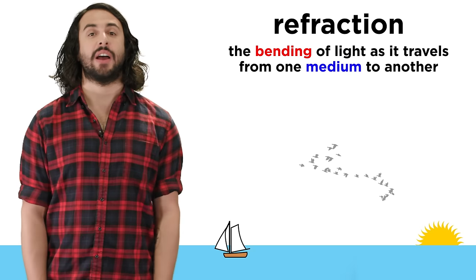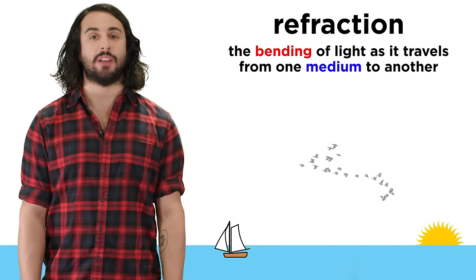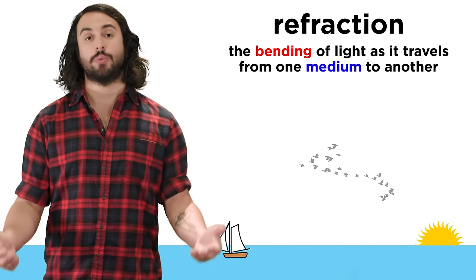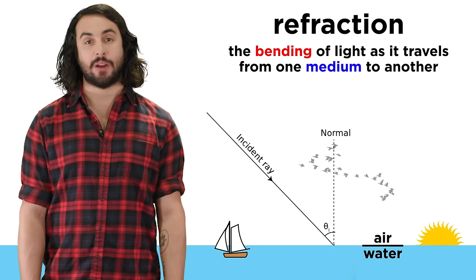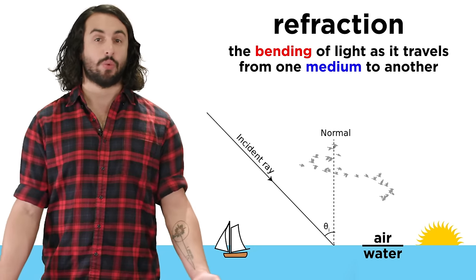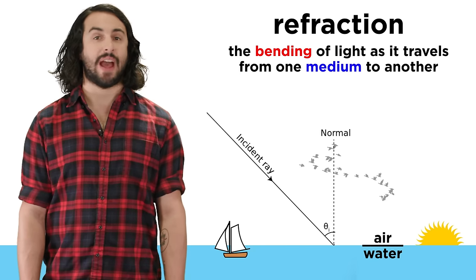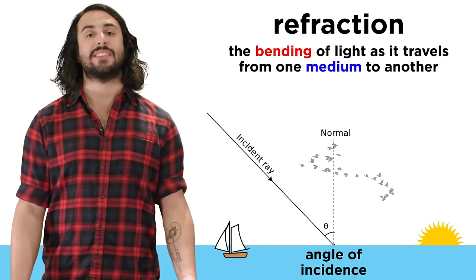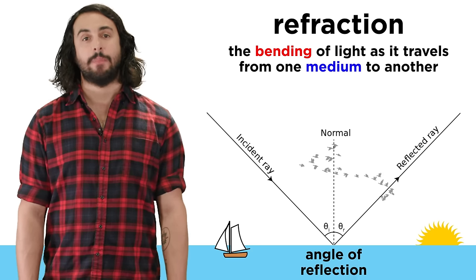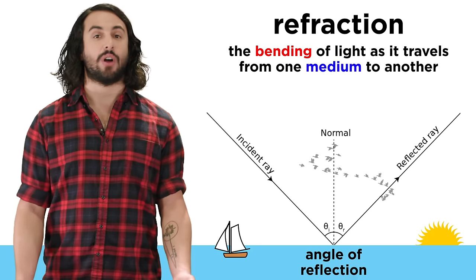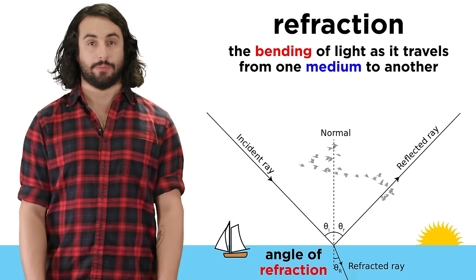An interesting phenomenon is the way light bends as it travels from one medium to another — this is called refraction. If light goes from one transparent medium to another, like from air to water, the light ray changes direction at the boundary. The angle of incidence will be measured as before, but instead of an identical angle of reflection, there is a new angle of refraction.